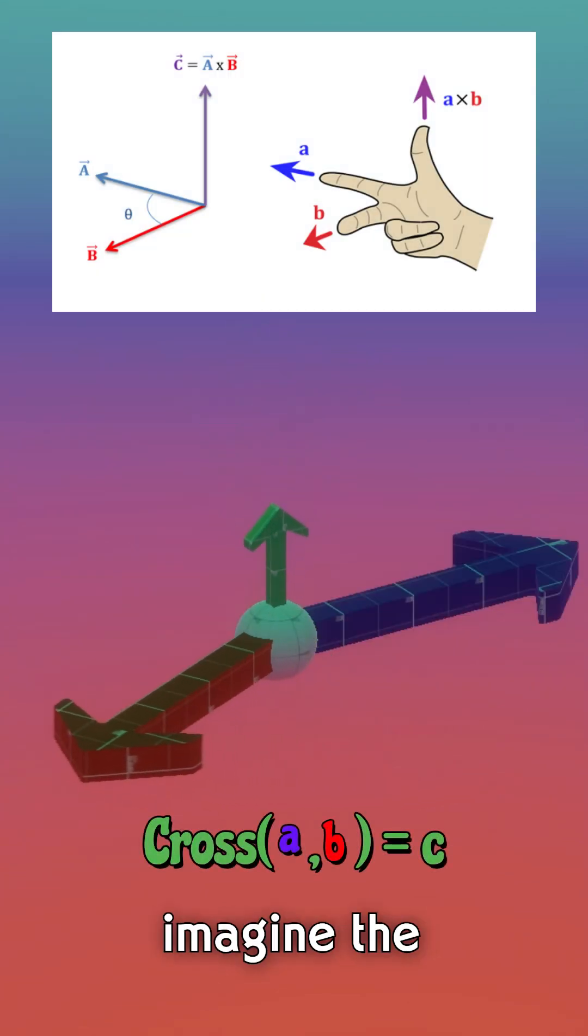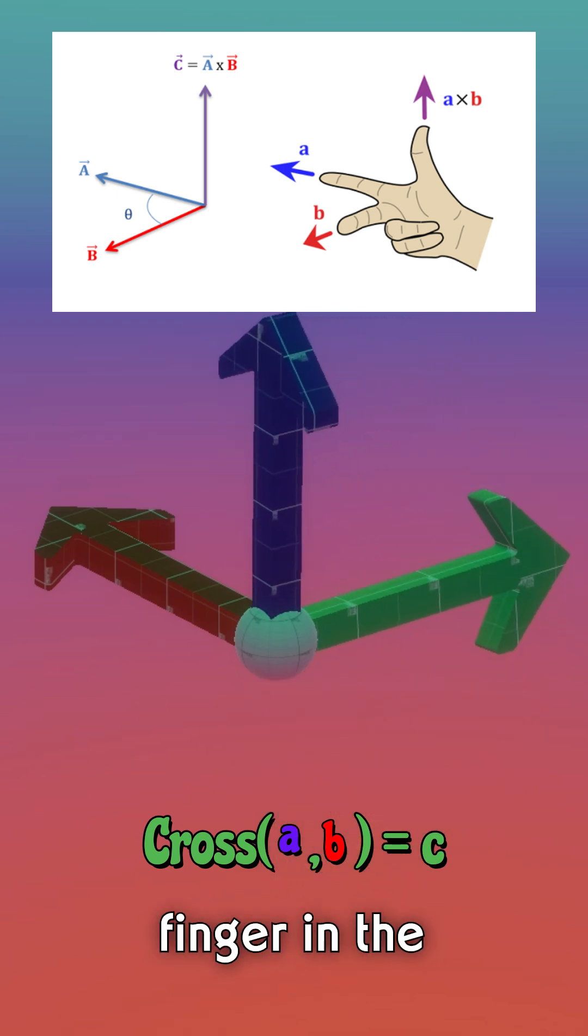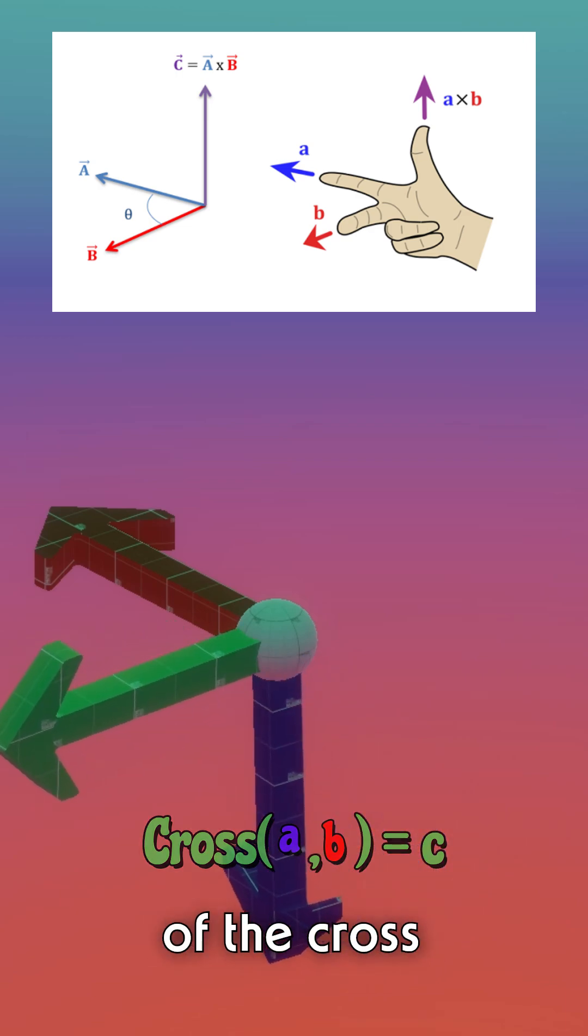A quick way to imagine the cross product is using the left hand rule. Point your index finger in the direction of vector A and your middle finger in the direction of vector B. Now your thumb will point in the direction of the cross product.